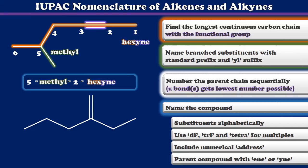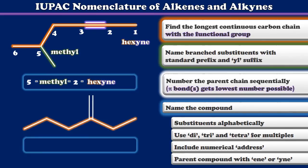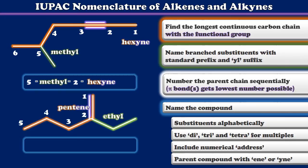Let's try one more — this alkene. Just as before, we find the longest continuous carbon chain that contains the functional group. The longest continuous chain in the entire molecule doesn't actually contain the double bond, so we can't use that six-membered chain. We're forced instead to use the five-membered chain because it contains the functional group, making this a pentene molecule. Using this parent hydrocarbon, we see a single ethyl substituent because it has two carbons. Numbering so that our functional group gets the lowest possible number, the first carbon in the double bond is a one, and the ethyl group is at carbon two. So we would name this molecule 2-ethyl-1-pentene.